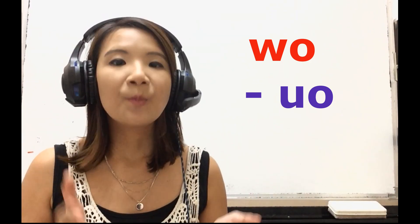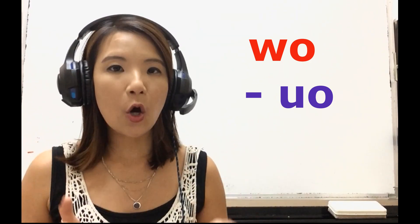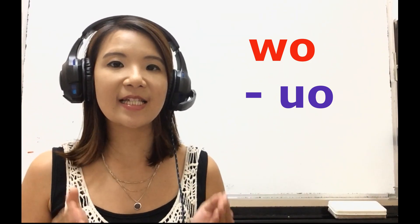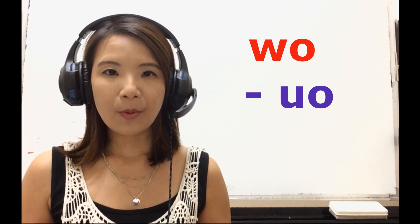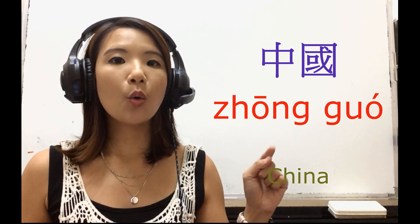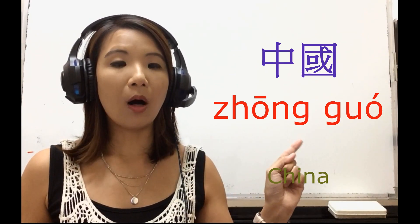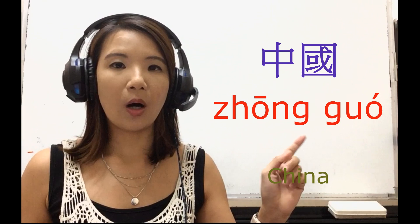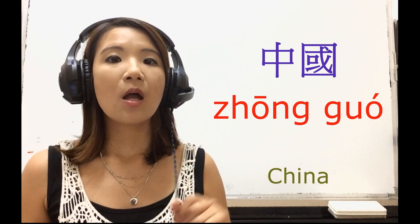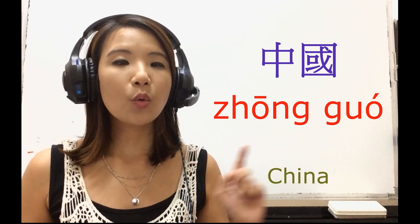So when it's with an initial, the tone mark is on the O-O. Let's give some examples. Example number one: 中国, 中国, 中国.